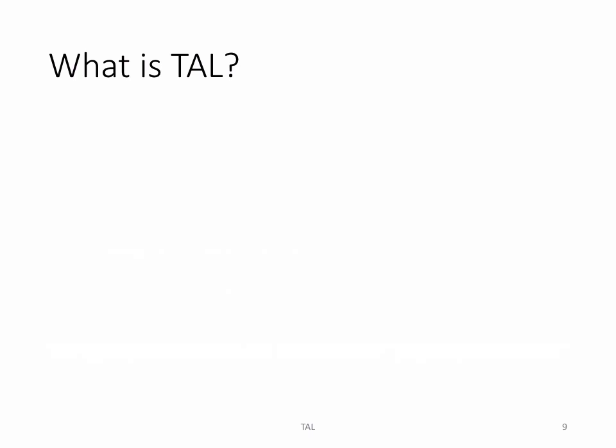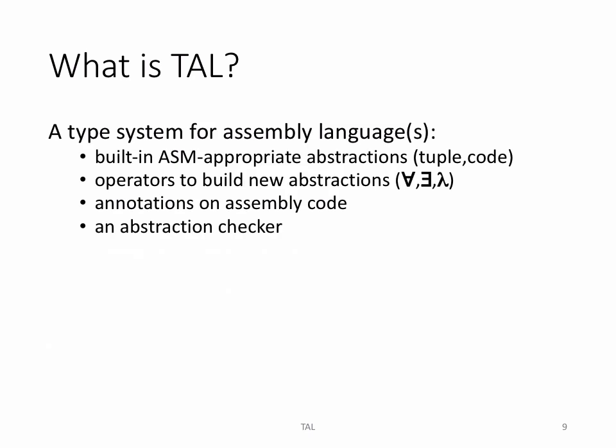What about Typed Assembly Language? How can we take these ideas — using types to annotate programs and prove programs run correctly and don't crash — and apply them to assembly language? They designed a typed assembly language. They took a small instruction set and thought about what abstractions are appropriate at the assembly language level: code pointers, heap-allocated memory described with tuple types, registers with types. They put those together, developed that type system, and proved the same soundness theorem: if something type-checks in the assembly language, it can't crash.